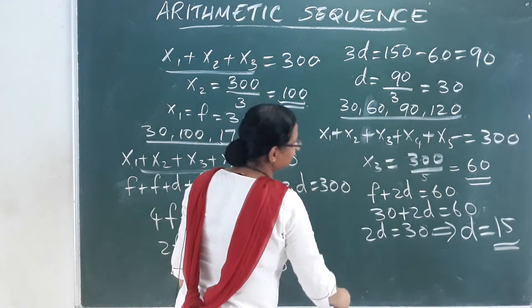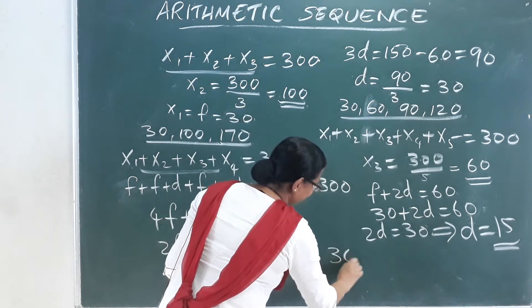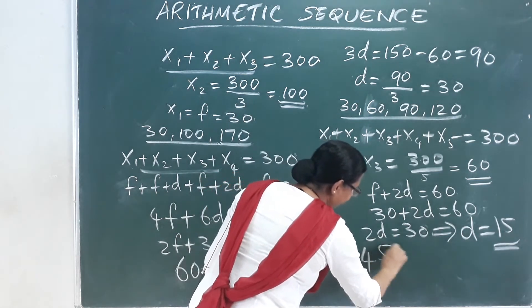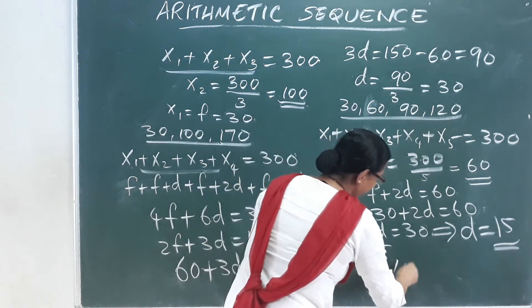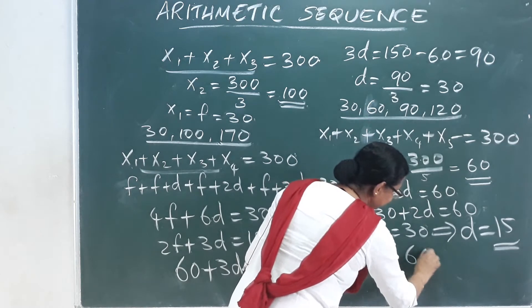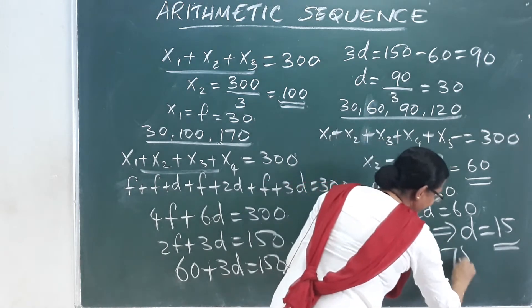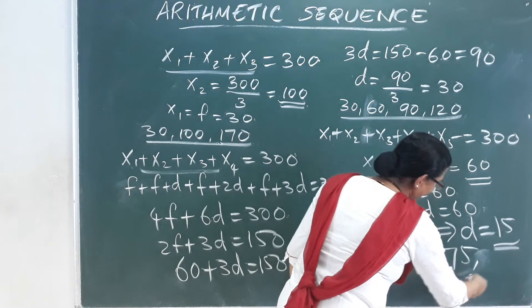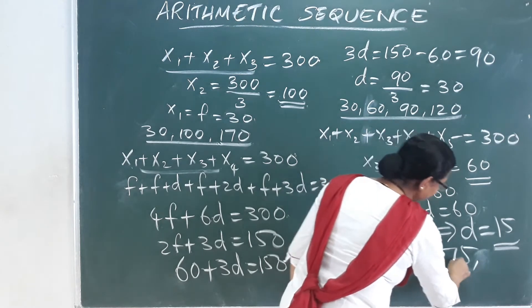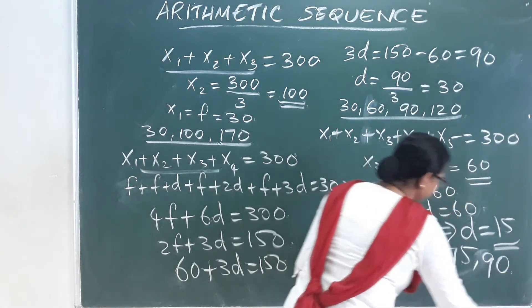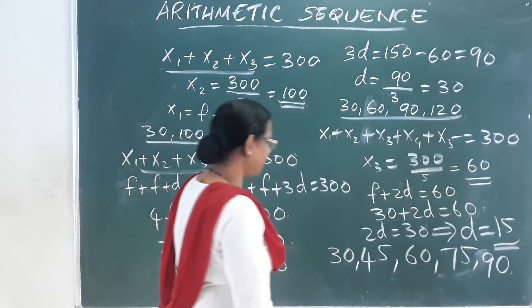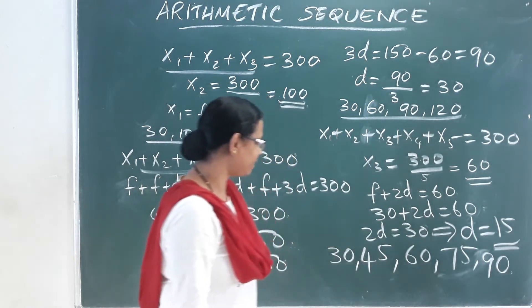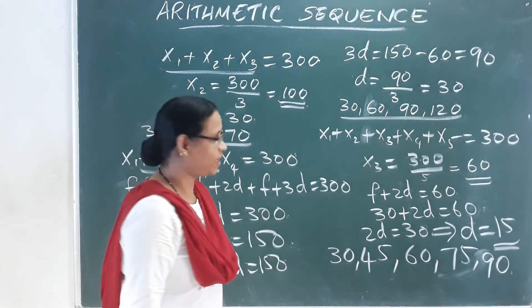The first term is 30. Adding 15 each time: 30, 45, 60, 75, 90. The sum of these five terms is 300.